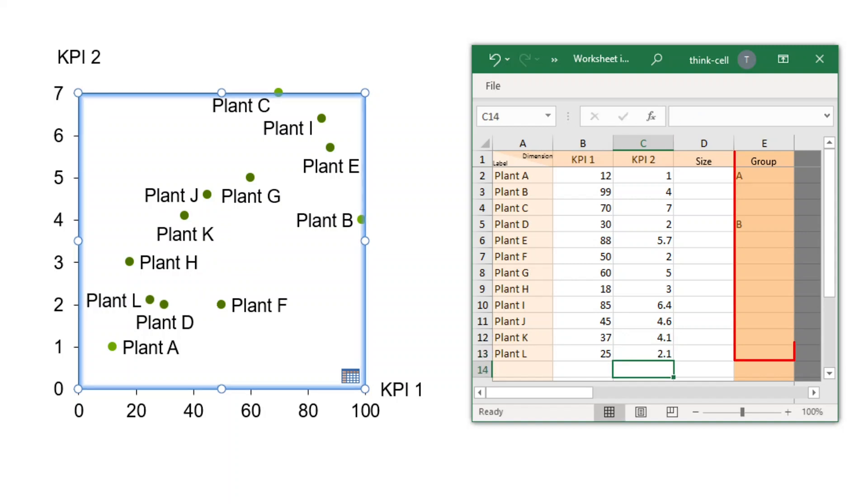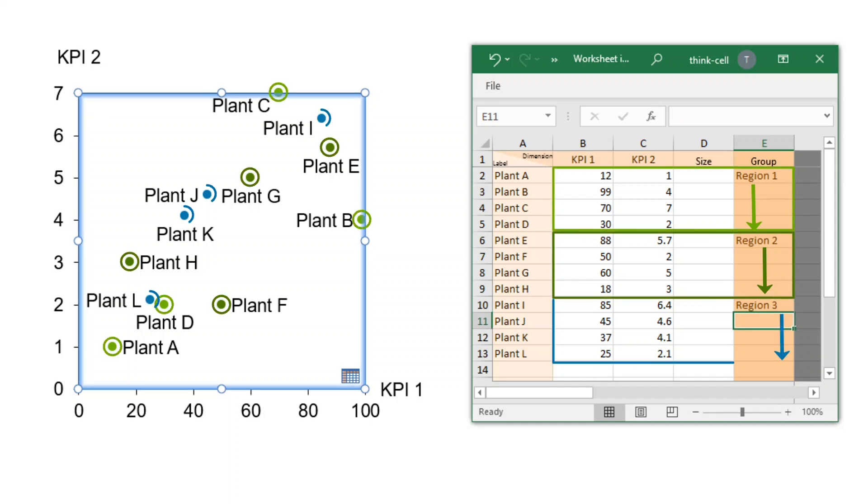The group column in the datasheet can be used to organize individual data points into groups. Type in names for the different groups, in our example, regions. When you insert a group name into a datasheet row, the rows you enter below will automatically be considered part of that group until you fill in a different group name. The data points in the chart are formatted according to the grouping in the datasheet.